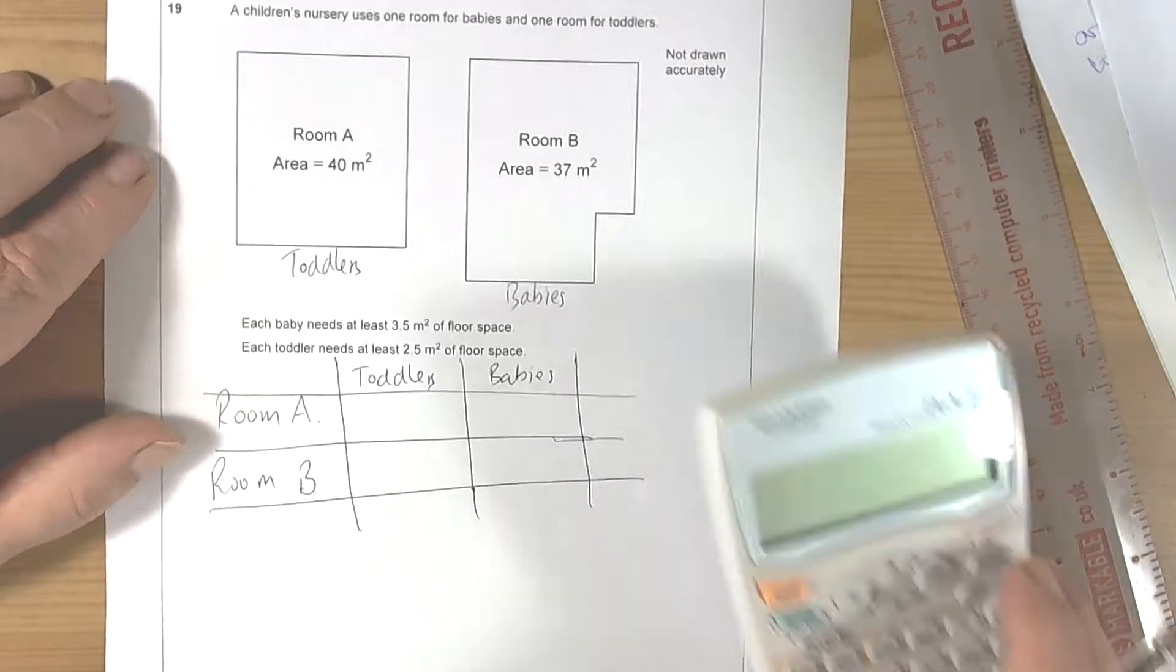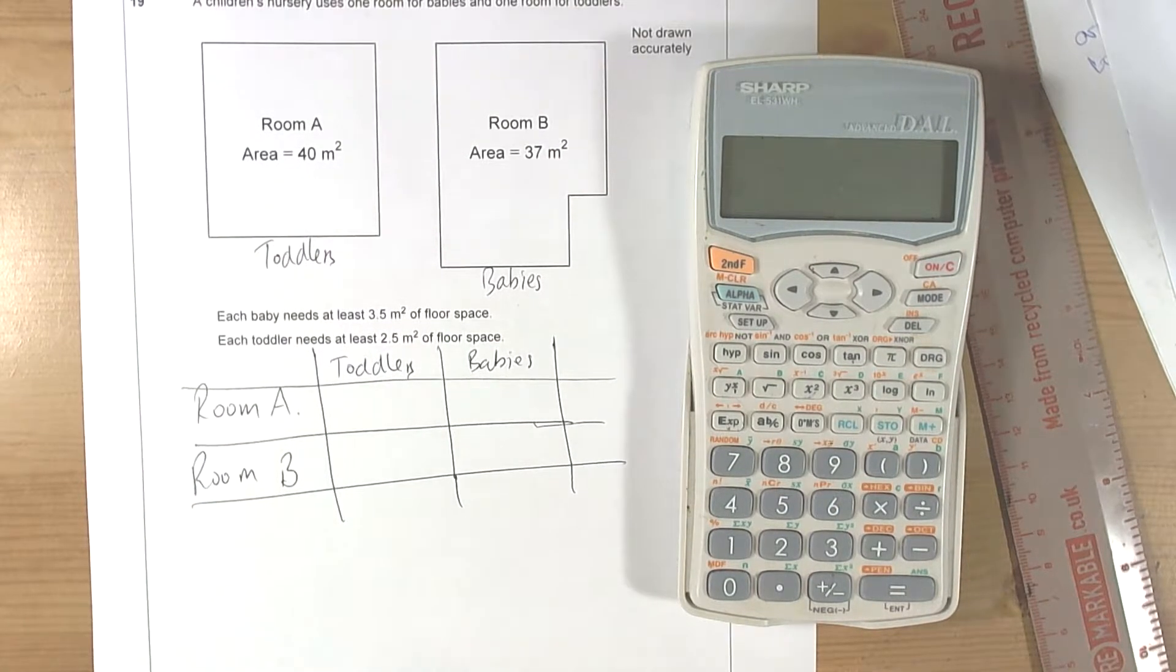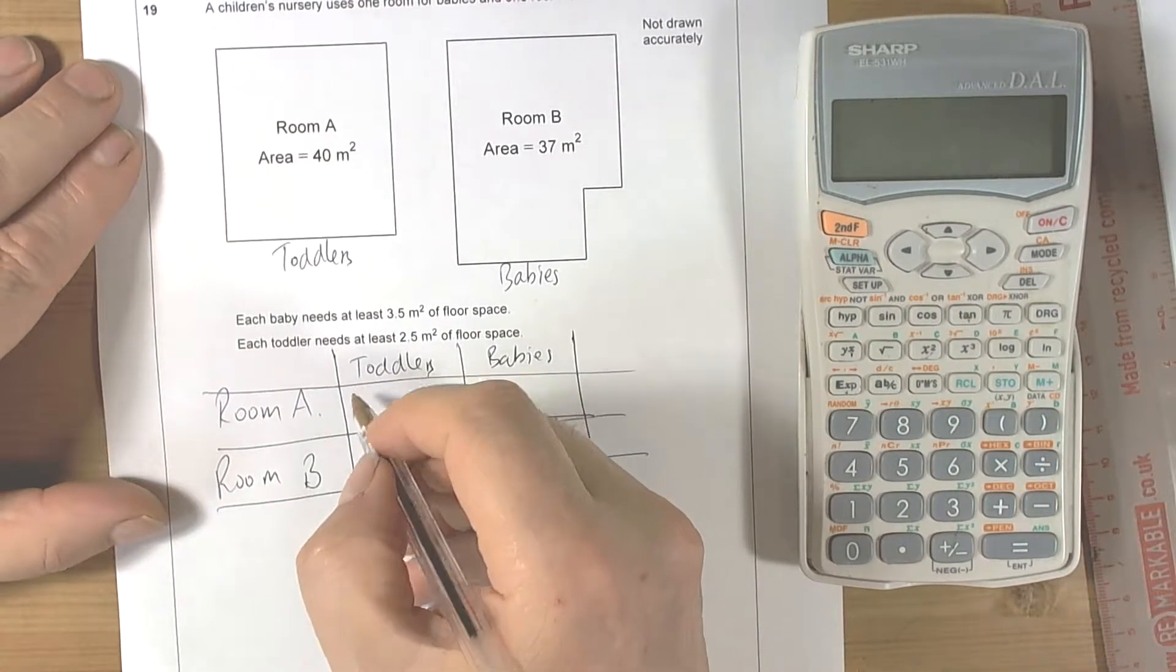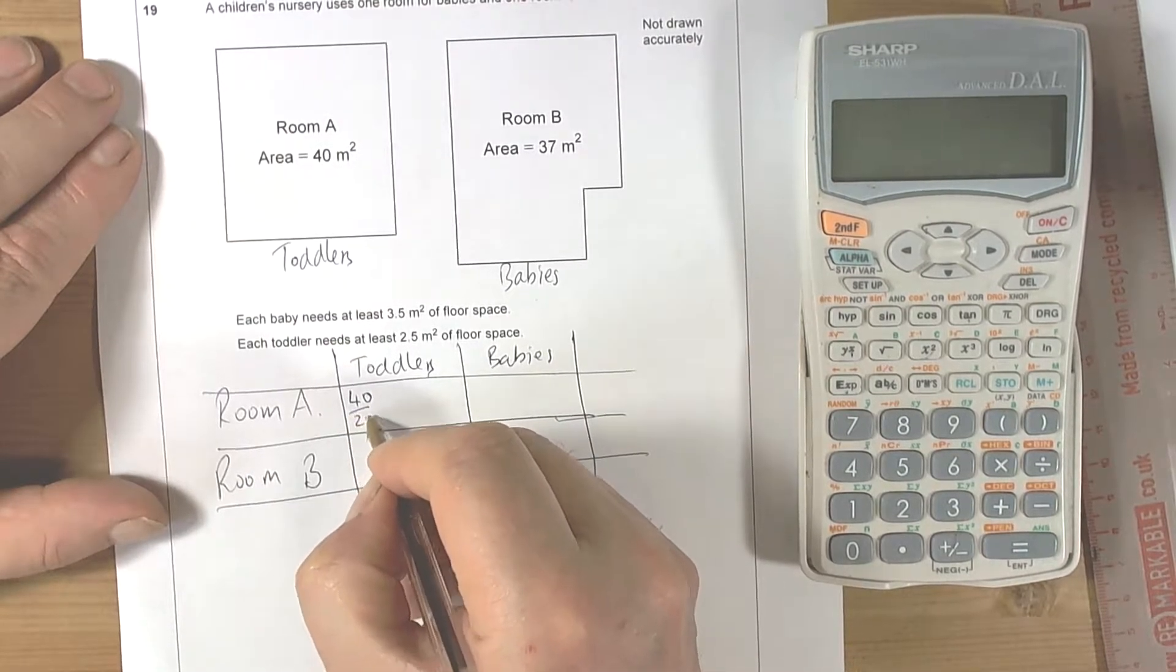Alright, so if I want to know the number of toddlers in room A, the number of toddlers in room A is going to be found by doing 40 divided by two and a half.